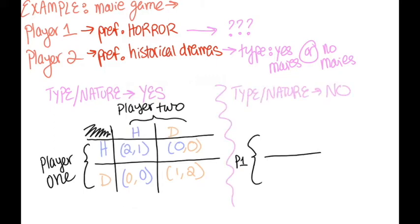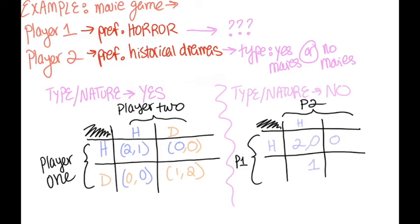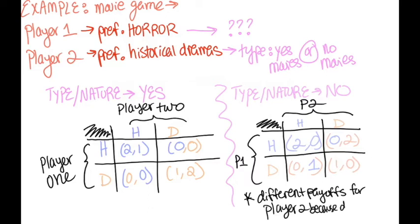If player 2's type, or nature, is not to want to go to the movies, the payoff matrix is as follows, again based on their preferences for movies, but now with different values due to the fact that player 2 doesn't want to go to the movies at all.